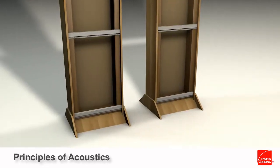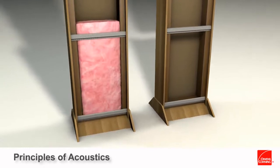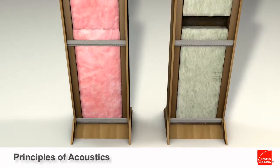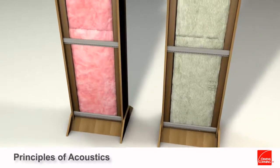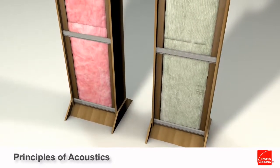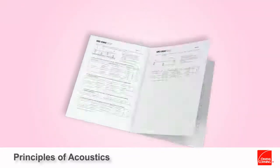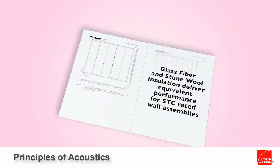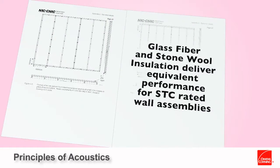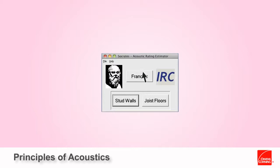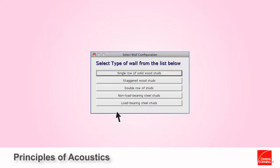A common industry myth is that using a higher density insulation will increase the STC rating of a partition. Let's compare QuietZone Pink Fiberglass Acoustic Batt Insulation versus Stone Wool Batt Insulation. The National Research Council of Canada's report IR 693 concludes that when evaluating the STC rating of partitions, the insulation's density — glass fiber or stone wool — does not affect the performance. Let's use the Socrates program to build a wall assembly and compare results using glass fiber insulations versus stone wool insulations.